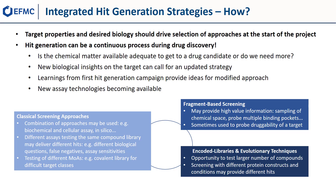Looking at the different screening approaches from the previous webinars: for classical screening approaches, you could combine several — for example, run a biochemical and a cellular assay, or run a high throughput and an in-silico screen. You may even want to test different assays using the same compound library, because it may deliver different hits. The assays ask different biological questions, the noise may be different so you may see different false negatives, and the sensitivity of the assays may be different. Depending on your target, you may also want to test different modes of action — for example, if you found some reversible hits, maybe try a covalent library for a difficult target class.